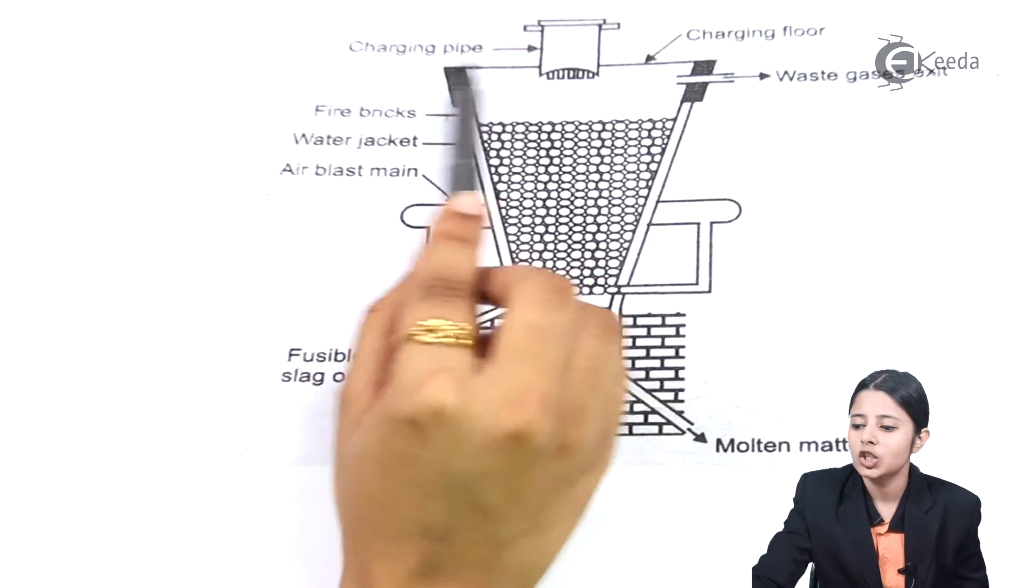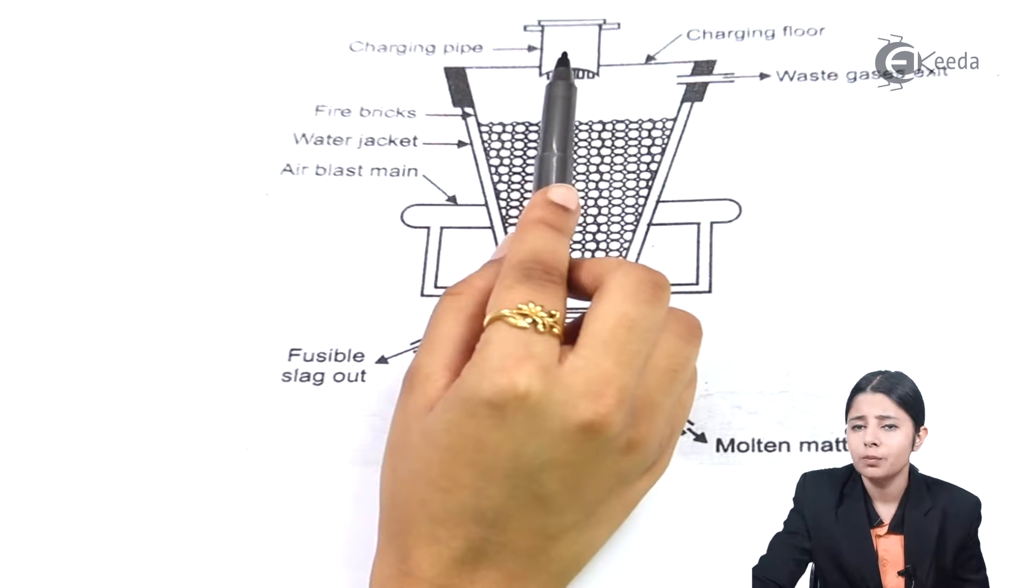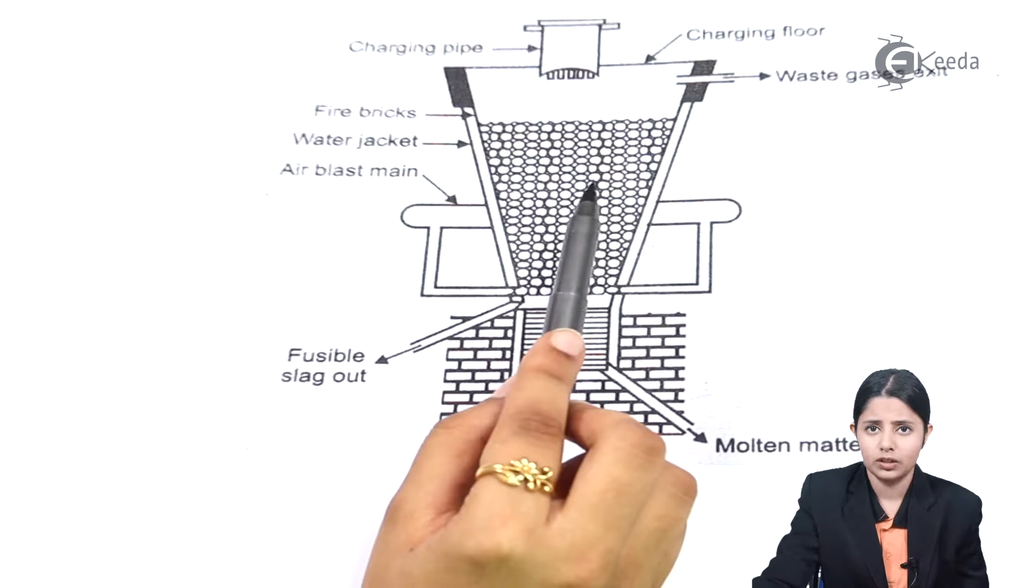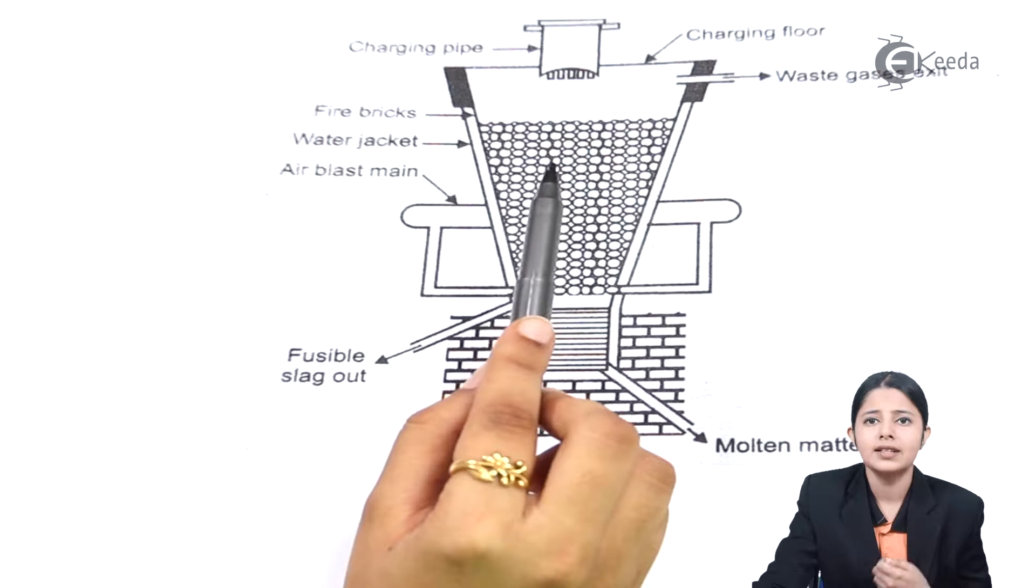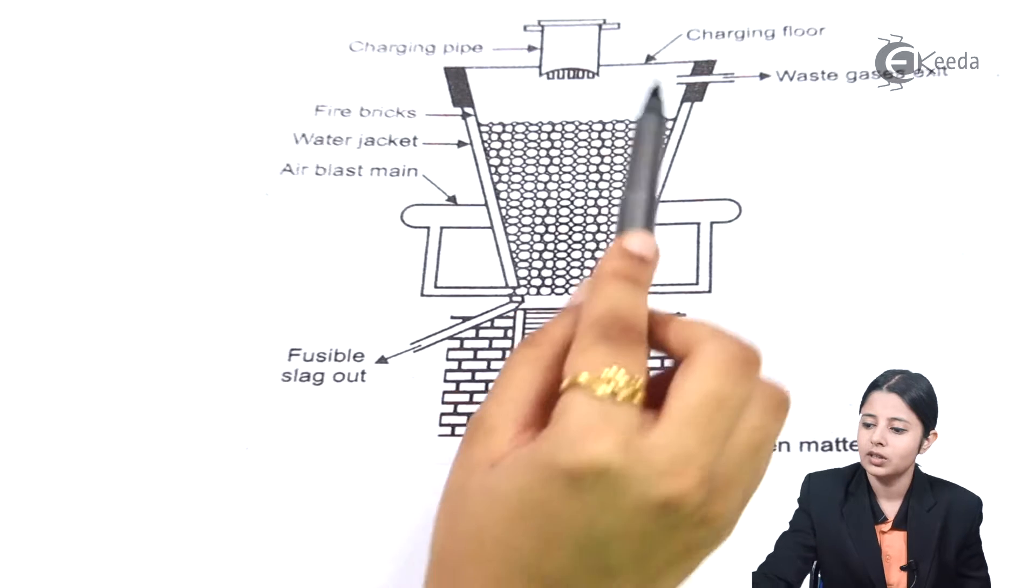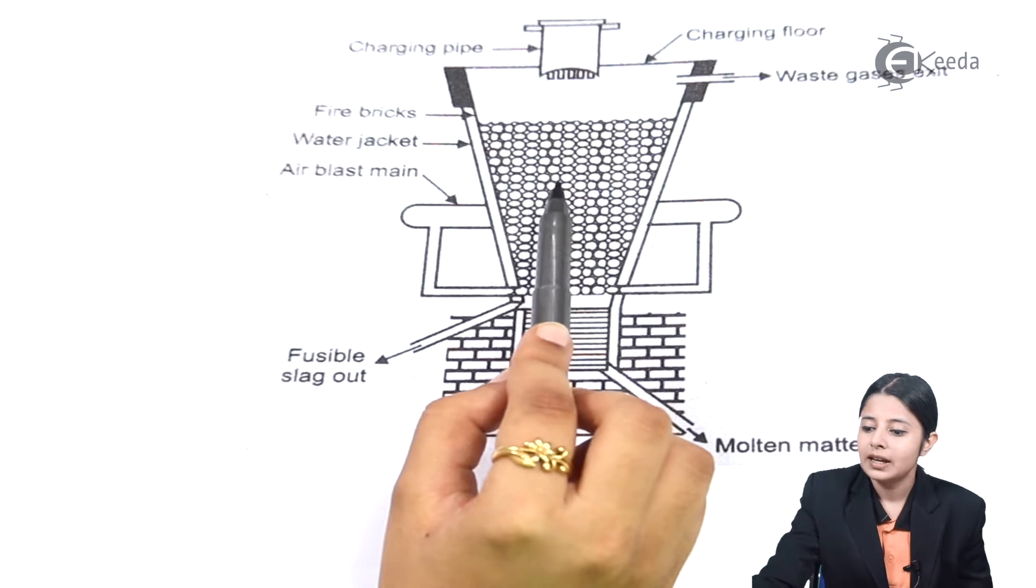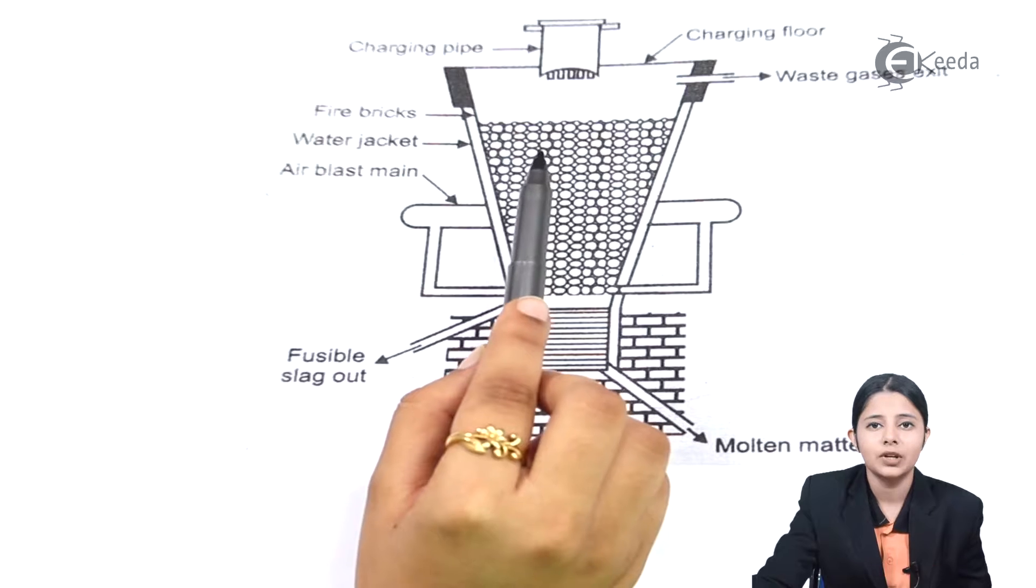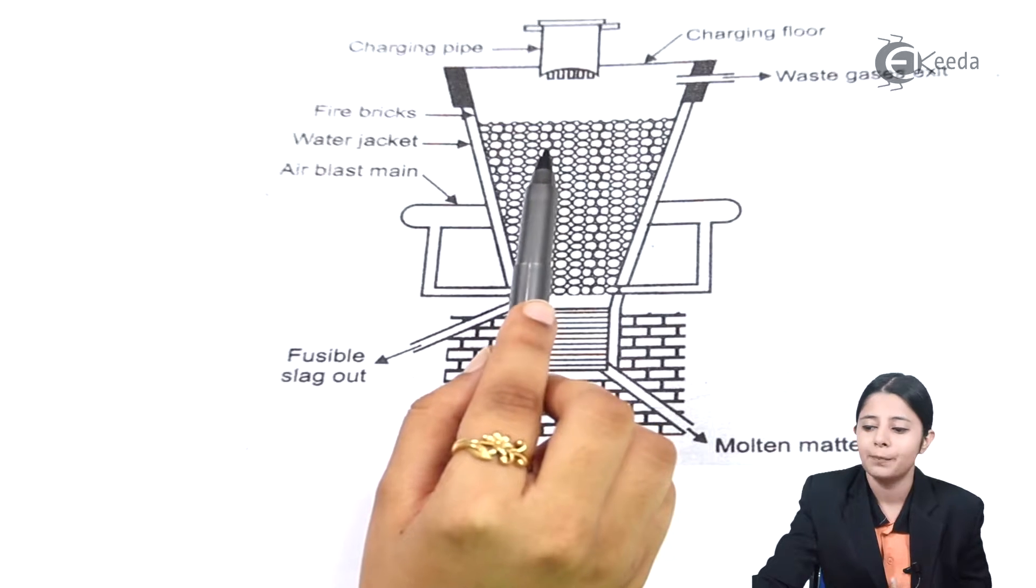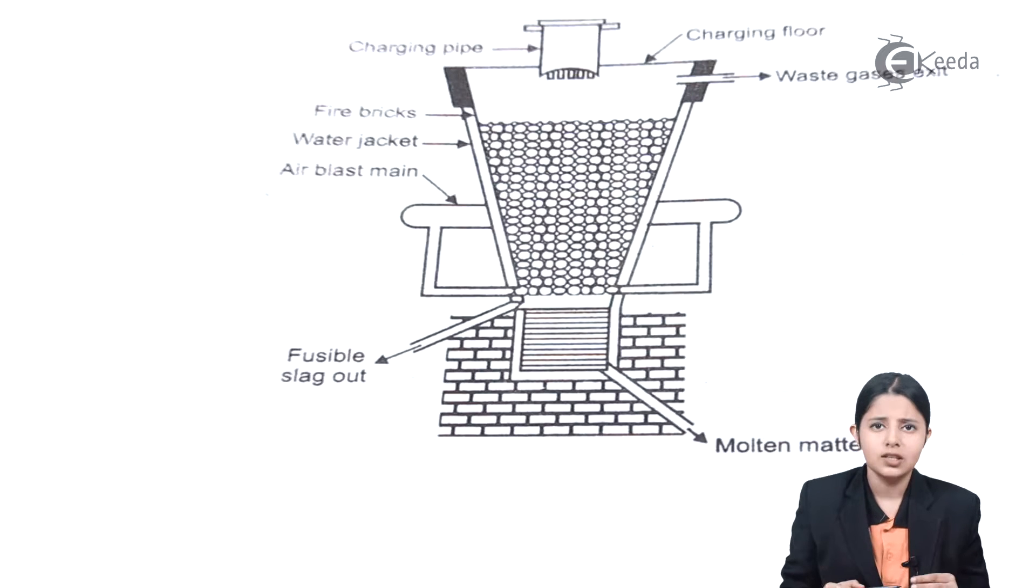So over here you can see there is a water jacket onto the walls. This on all the four sides of the walls we will have this water jacket. This water jacket, the water will be in the presence of water vapor which are in the heated form, so that there is no entry or exit of heat otherwise. On top we have a charging pipe and a charging floor. With the help of this charging pipe the charge is passed through it.